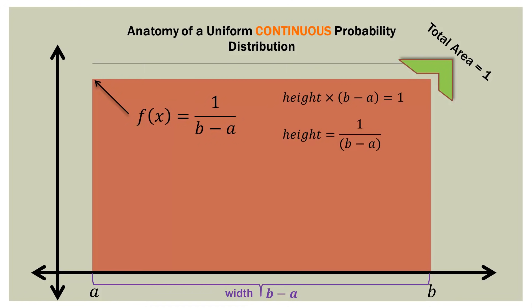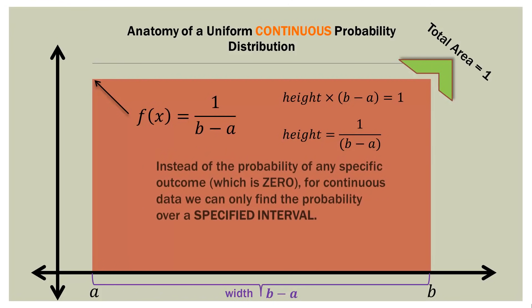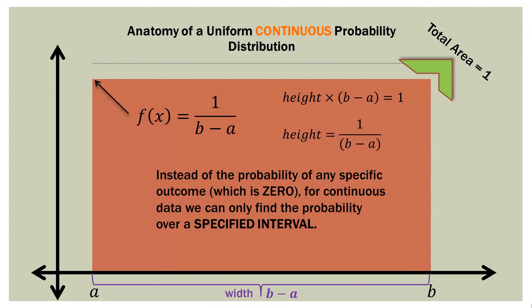The area is one, the width is B minus A, therefore the height is one divided by B minus A. With this continuous uniform distribution, we talked about a very important concept: the probability of any specific outcome in a continuous distribution is zero. All we can do in a continuous distribution is find the probability over an interval or a range of outcomes.